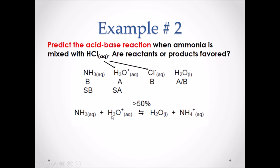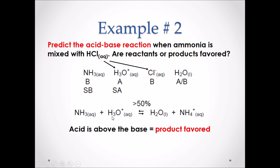We then transfer a hydrogen from the acid to the base, resulting in the products H2O and NH4+. To determine the extent of the reaction, we compare the reactants and determine that the acid is higher on our table of strengths of acids and bases compared to the base. Therefore, this will be product favored.